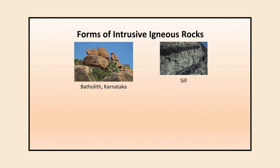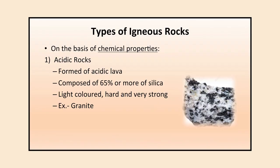Different forms of intrusive igneous rocks can be seen in pictures. Batholiths are dome-shaped. Sills show horizontal banding — the dark-colored rocks intruded into existing rocks. Dykes are vertical in nature — the dark-colored igneous rocks you can see are dykes formed when lava intruded into existing rock.